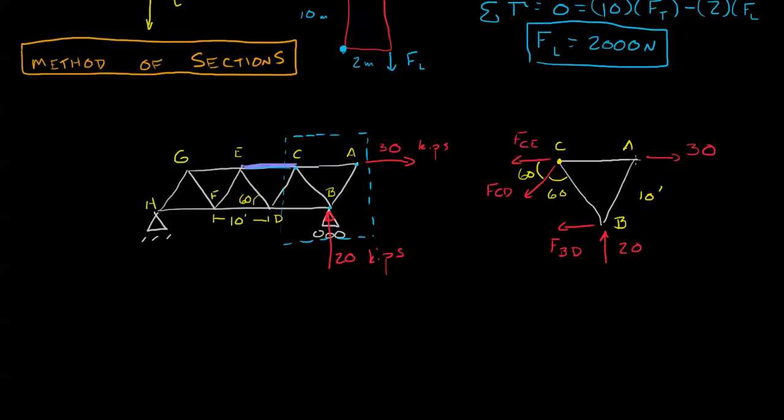Now what we could do is once again just use our method of joints and go joint A, joint B, joint C. But the difficulty is that it just takes time. So let's see if there's a faster way. Looking at this free body diagram, see if you can figure out a quick and easy way to isolate force CE.